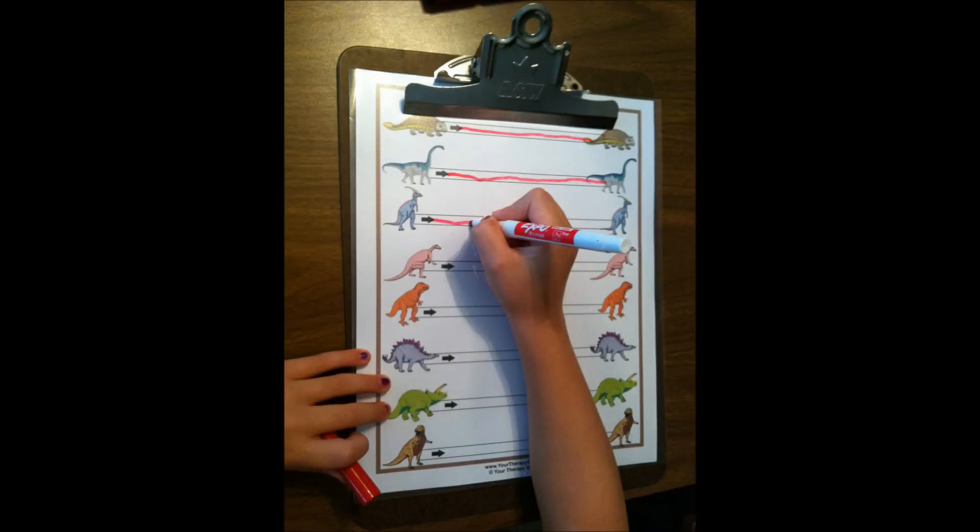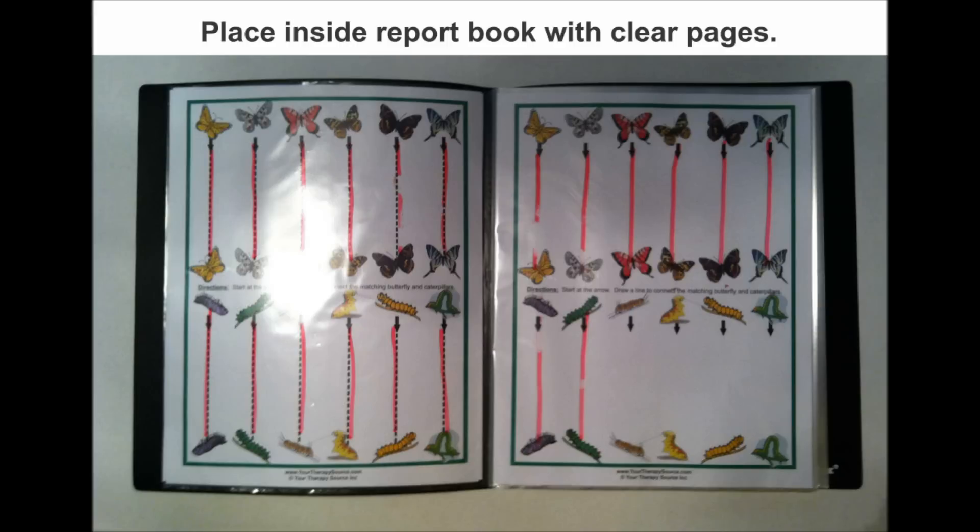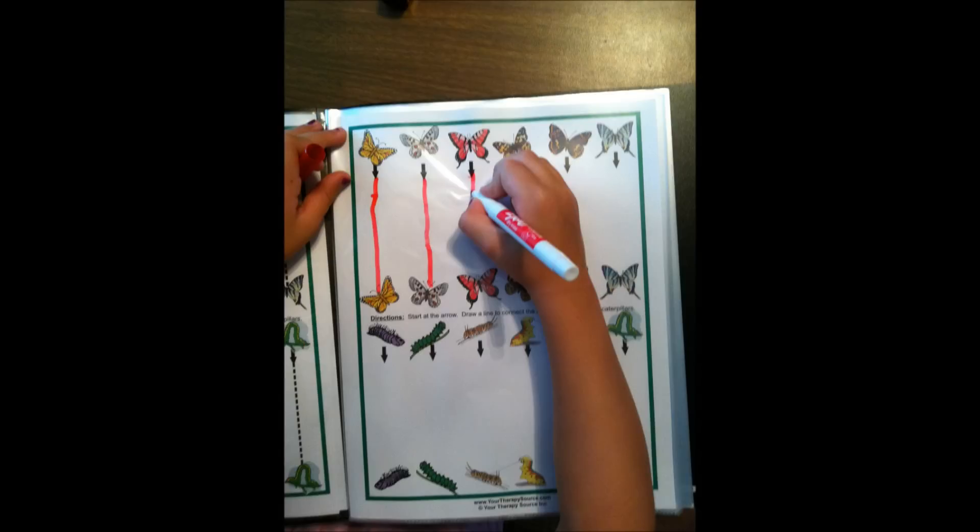Another idea would be to purchase a report book that comes with clear pages inside. It's almost like a photo album, and you can just slip the pages in and the child can progress through the workbook using a wipe off marker.